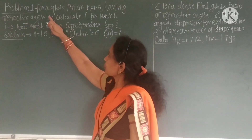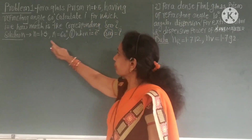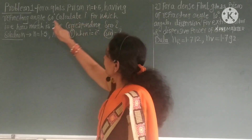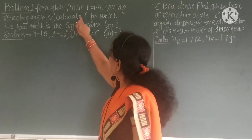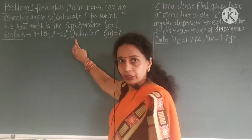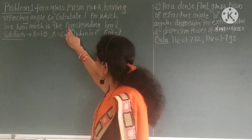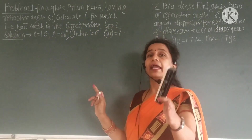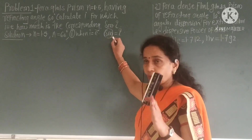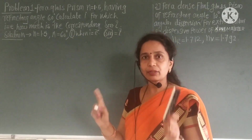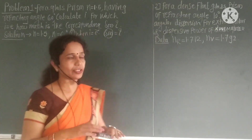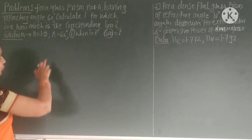First problem: for a glass prism, n is equal to 1.5 — that means refractive index of glass — having refracting angle 60 degrees. Calculate i for which i is equal to e, and also calculate the corresponding angle of deviation, which means we have to calculate delta m, the minimum deviation angle.